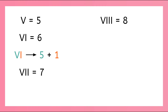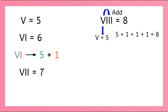Let's make sure we understand this. V is equal to 5, and we have the symbols for the smaller numbers after V, which means we add. So VIII is saying 5 plus 1 plus 1 plus 1, which equals 8. Perfect.